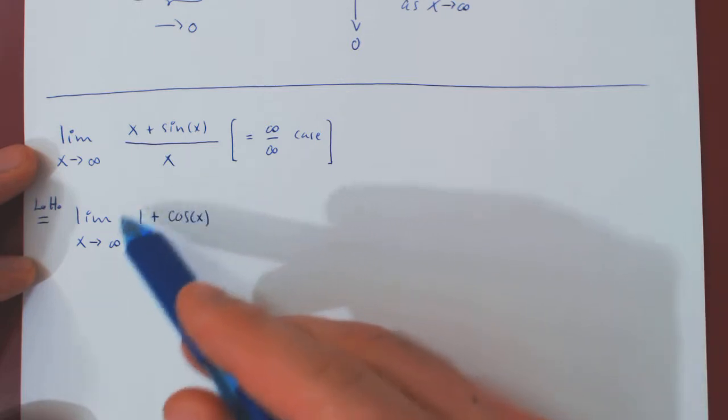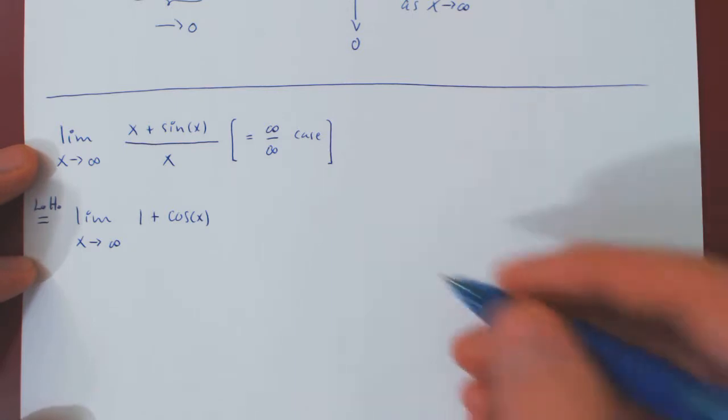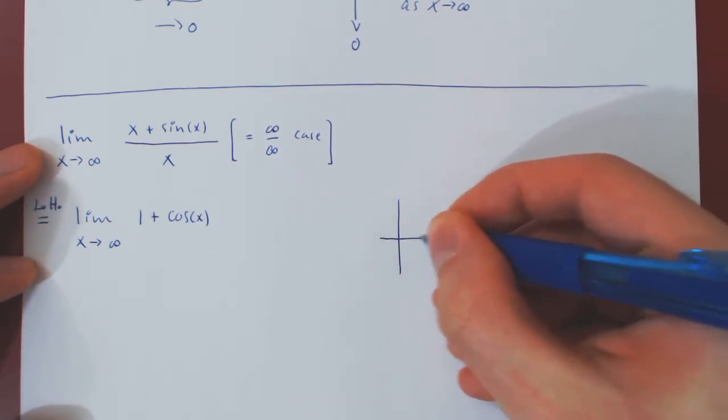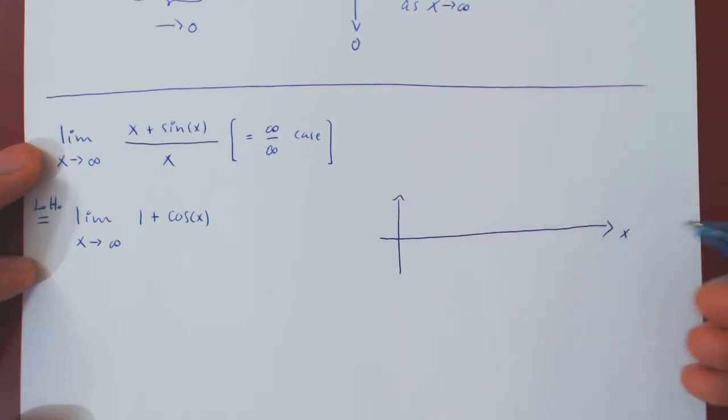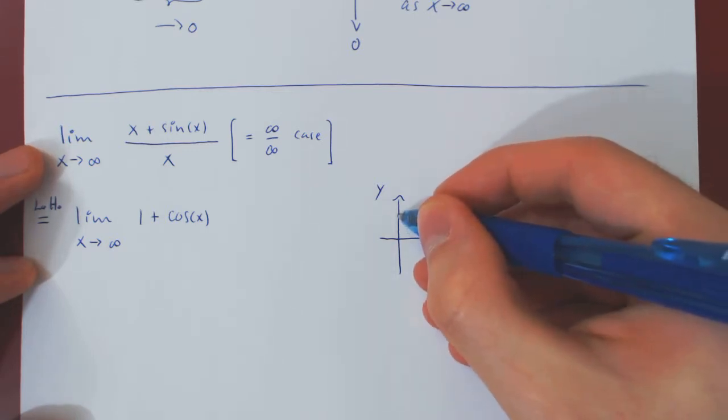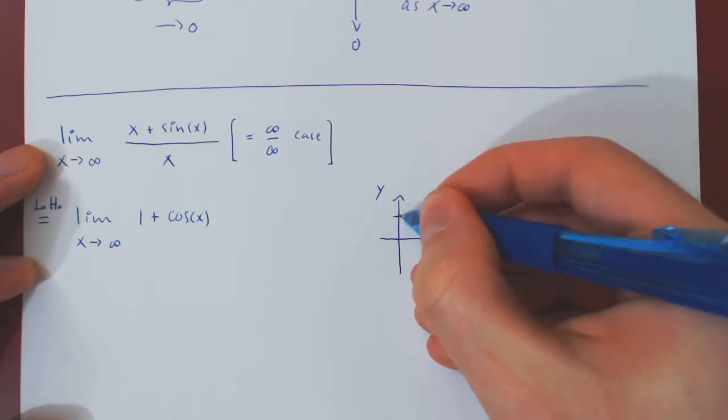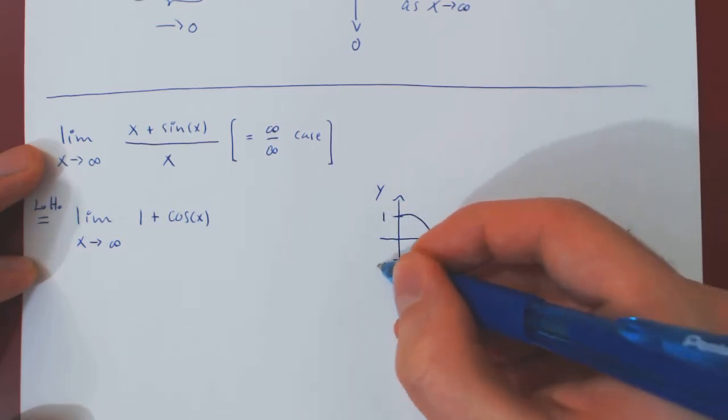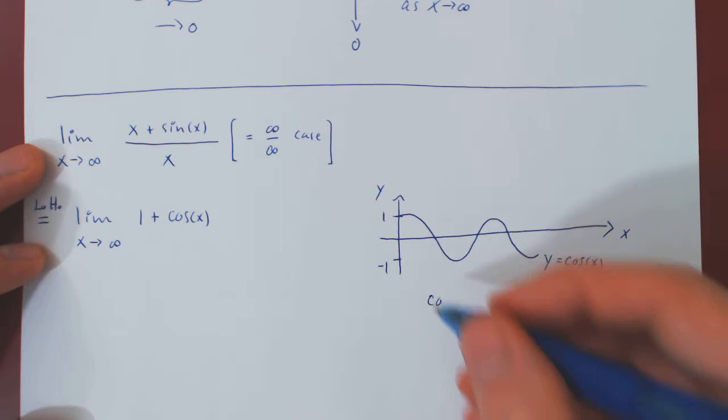And, there's something funny going on here. If you sketch a graph of cos of x, again, it is a wave function, exactly like sine of x. The only difference is there's a slight shift in the wave, and cos of 0 is 1, so it begins first at 1, and then, again, it oscillates forever between 1 and negative 1. So, cos of x for all values of x will always be between negative 1 and 1.